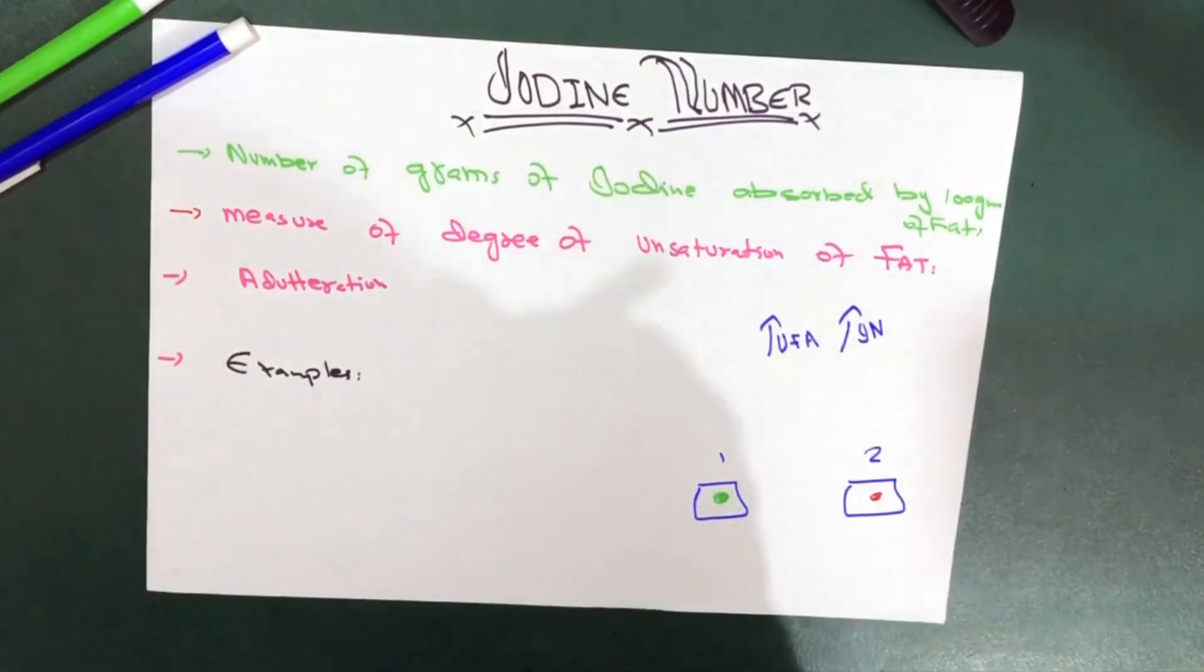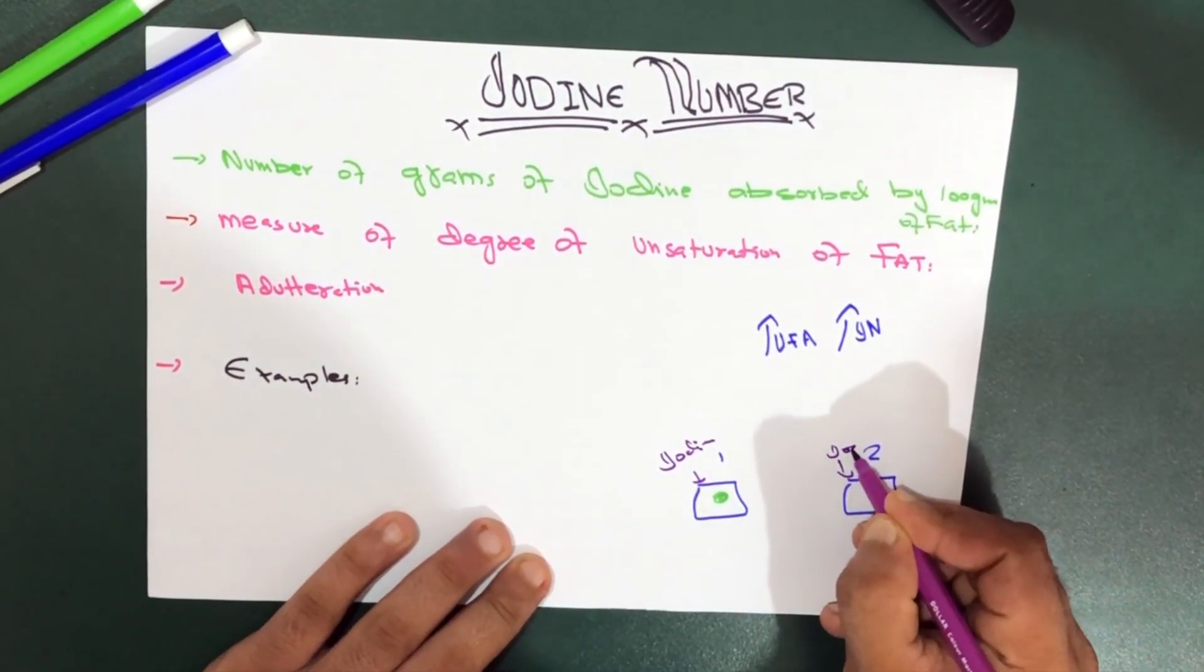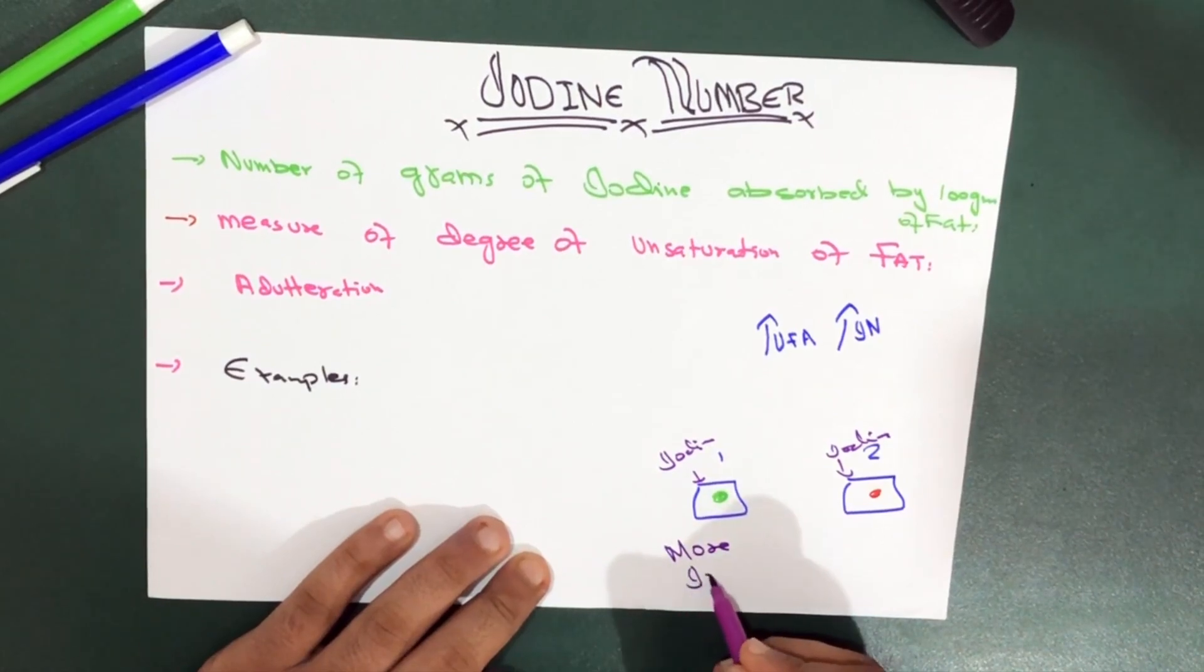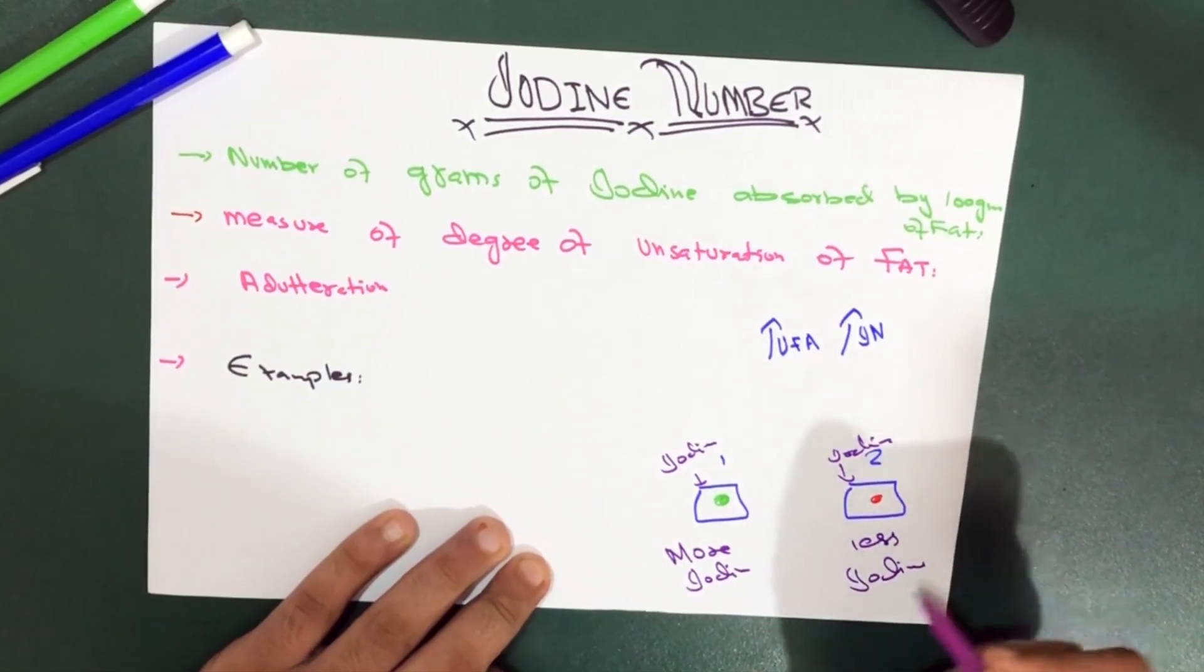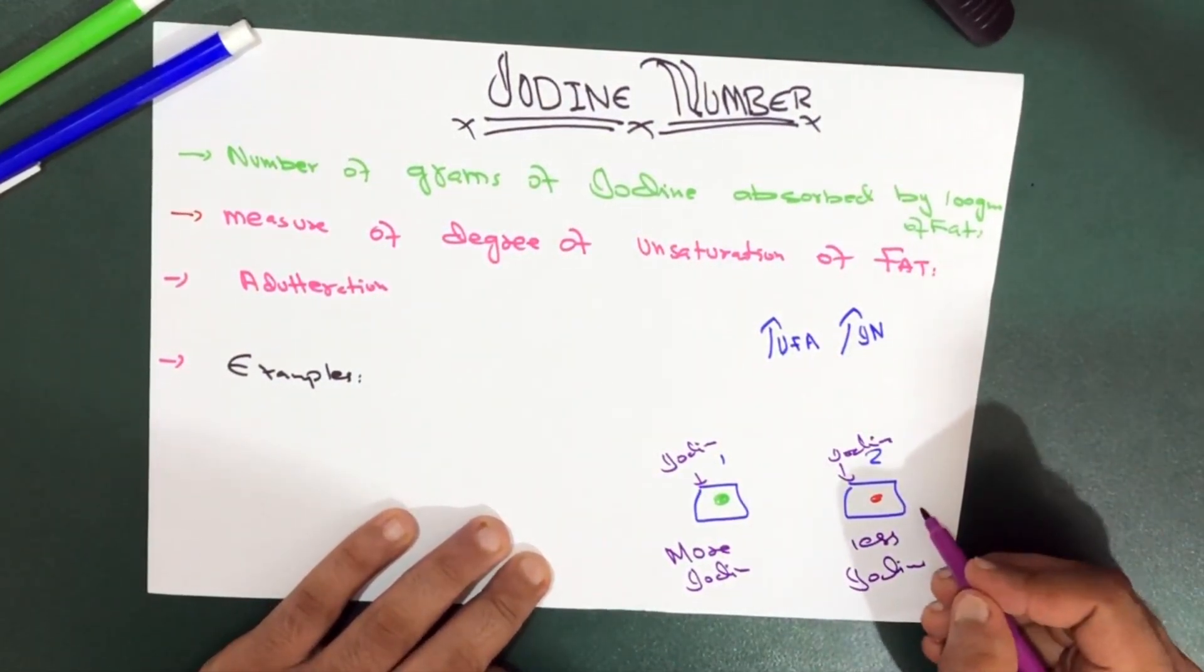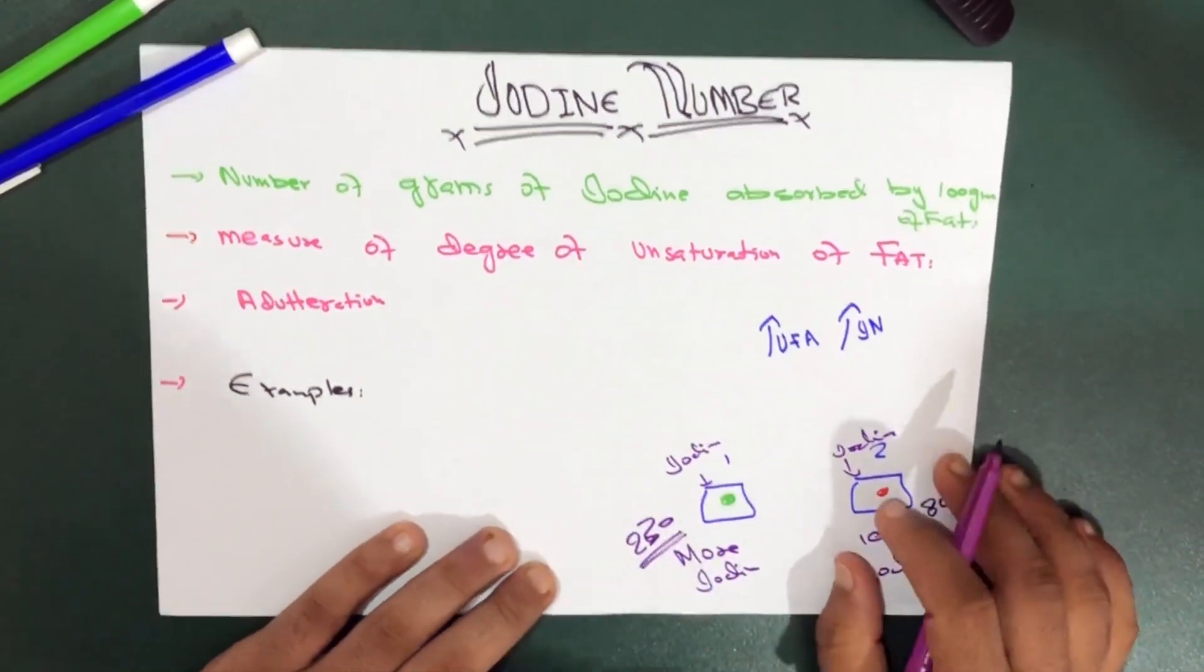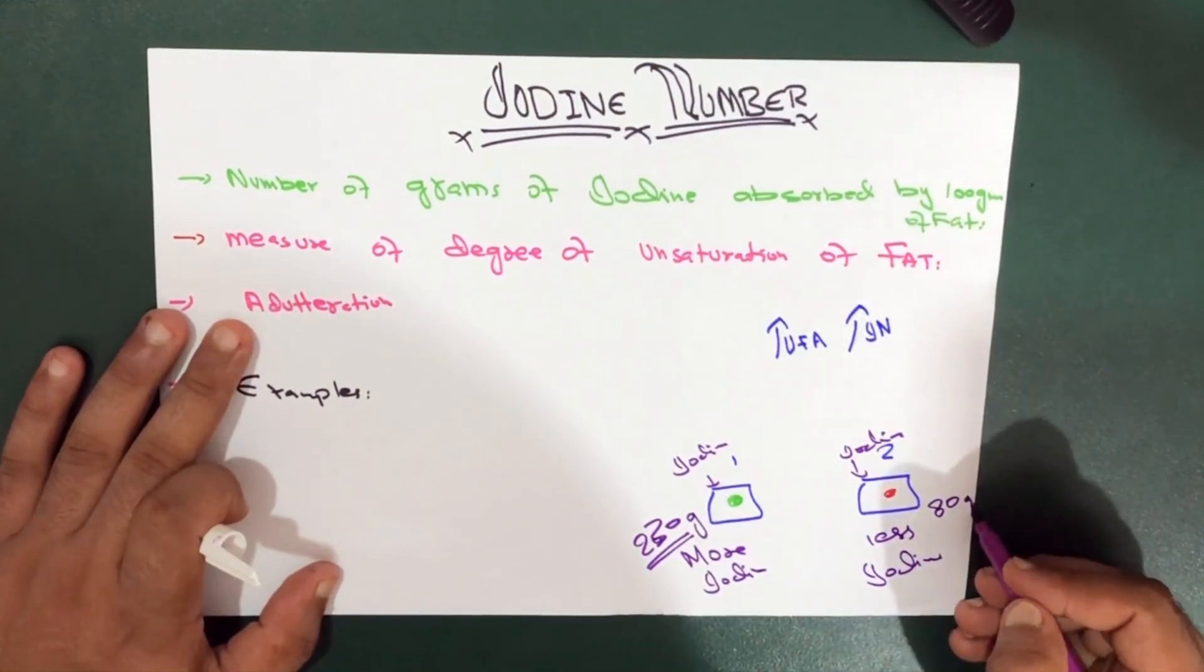If this fat absorbs more iodine and this absorbs less iodine—for example, this one absorbs 80 grams and this one absorbs 230 grams of iodine. This is just a number.